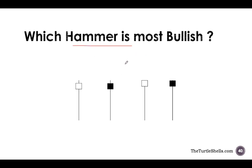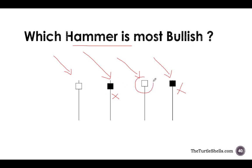Which hammer is most bullish? Since the question states all of them are hammers, all are coming after a downtrend. First, we can reject the two black body candles upfront because a hammer is a bullish candle. Comparing the remaining two, one has no upper shadow at all relative to the other. That means the one with no upper shadow is the most bullish of all four hammers. We need to identify both the validity and the strength of a hammer — which is what I cover in detail in my level one training program.